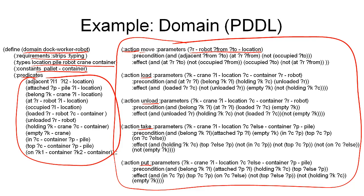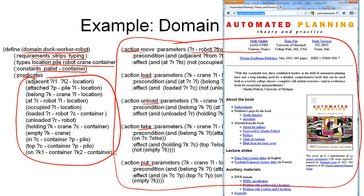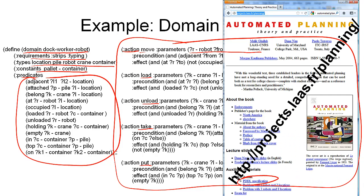If you find this hard to read or want to download it, you can go to the book website — this is all based on the automated planning book. At the bottom of that site is the PDDL specification of the dock worker robot domain. If you click the link, you will get a PDDL file which is almost exactly what you've seen in this slide. The URL is http://projects.laas.fr/planning.